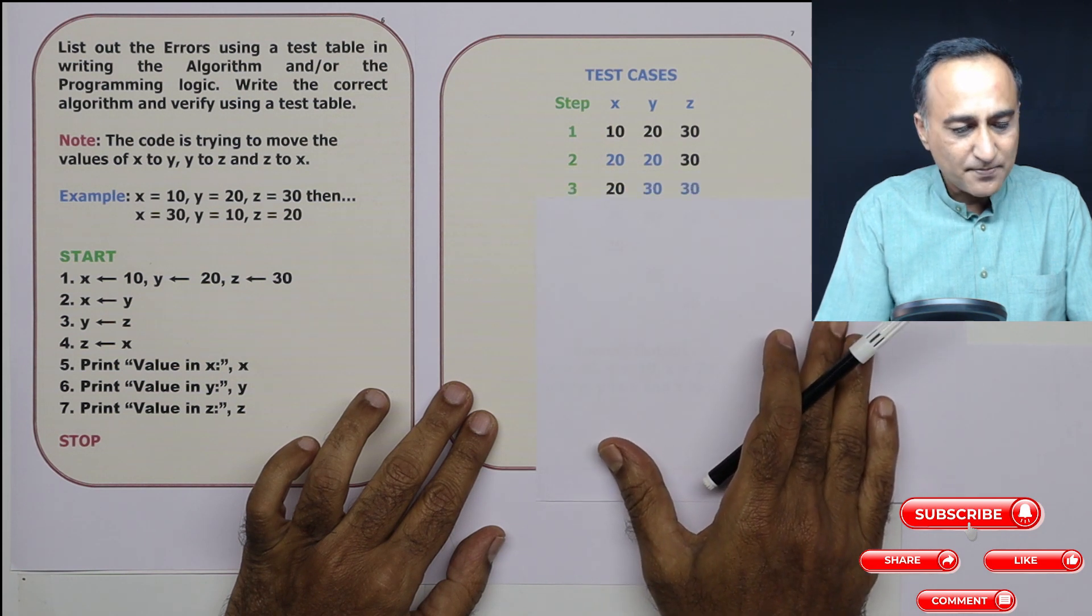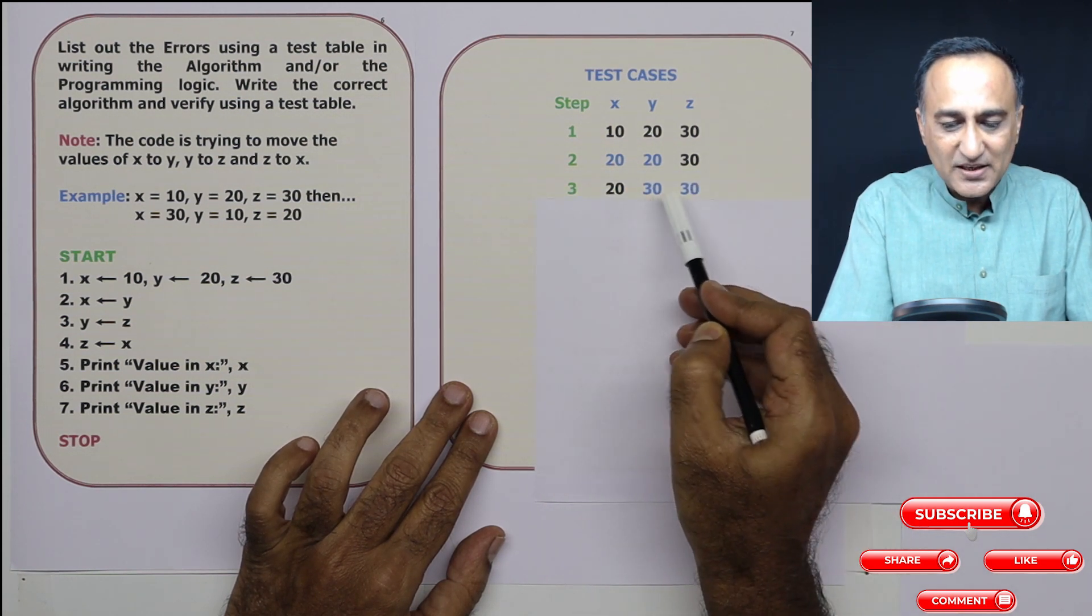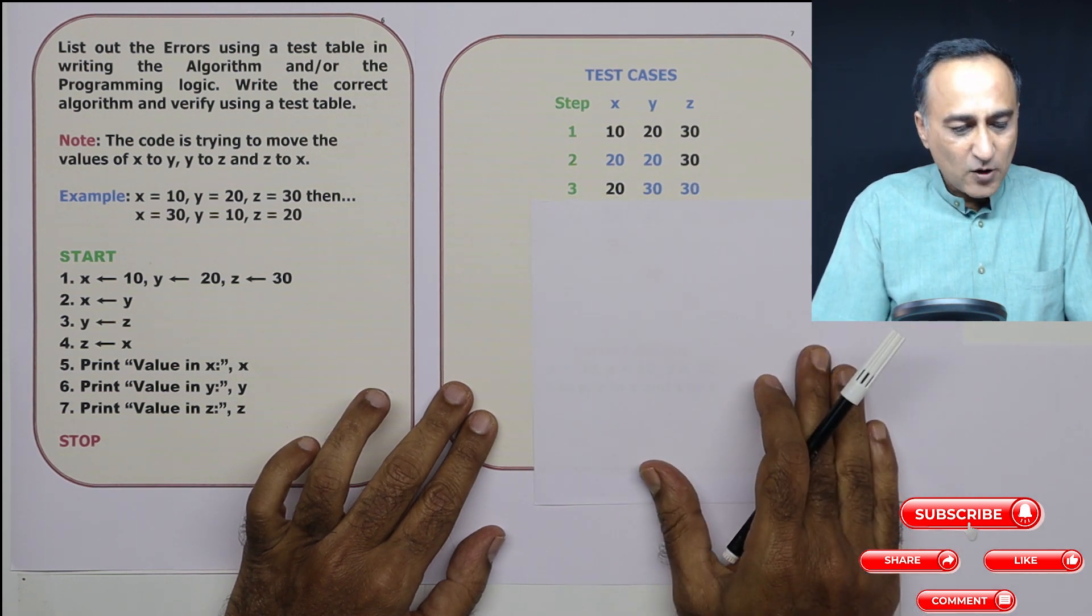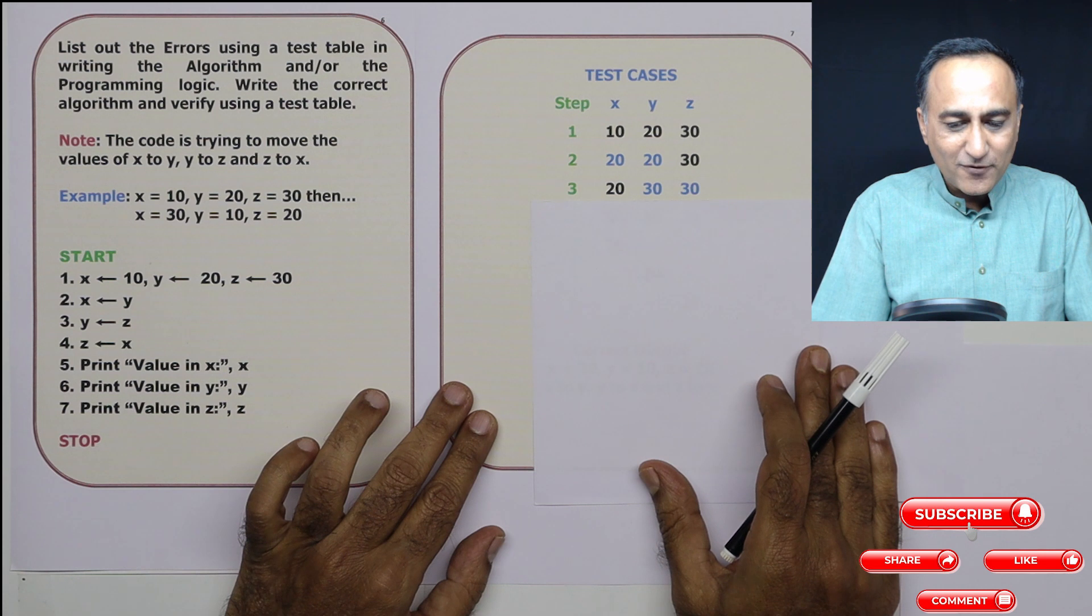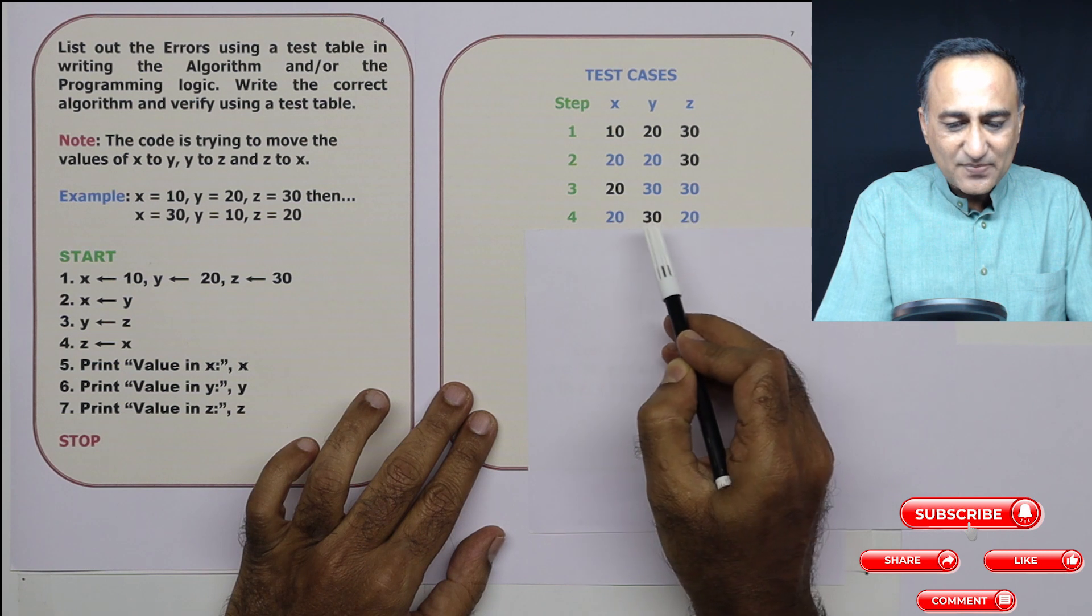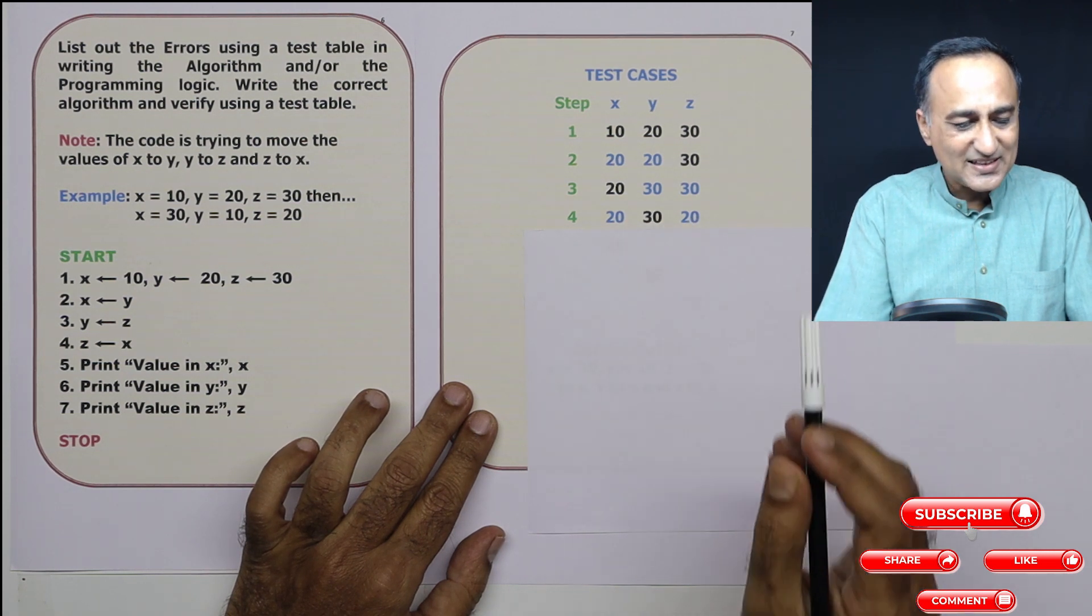Now next step, y takes the value of z, so y becomes 30, z is also 30, x is 20. Now, z takes the value of x. Since z takes the value of x, z is 20, x is 20, y is 30. This is step number four.